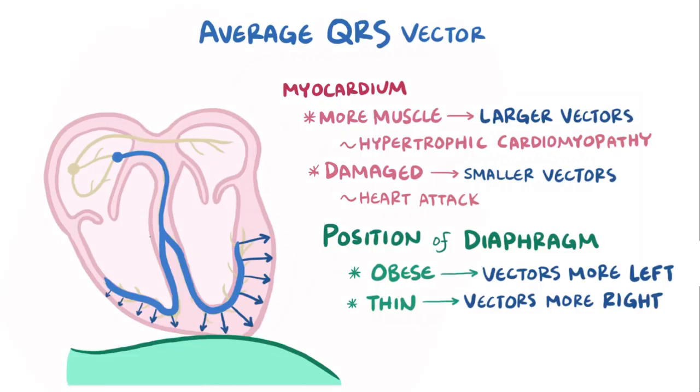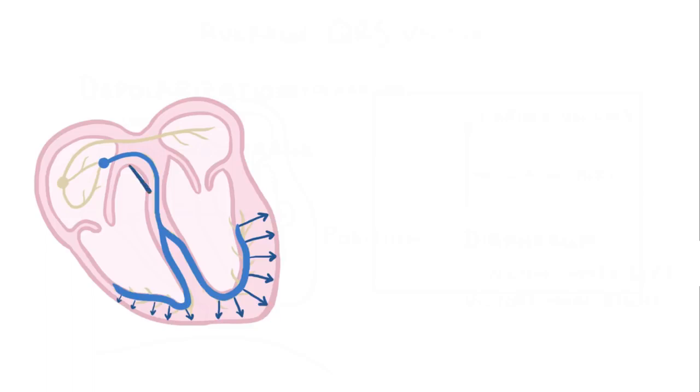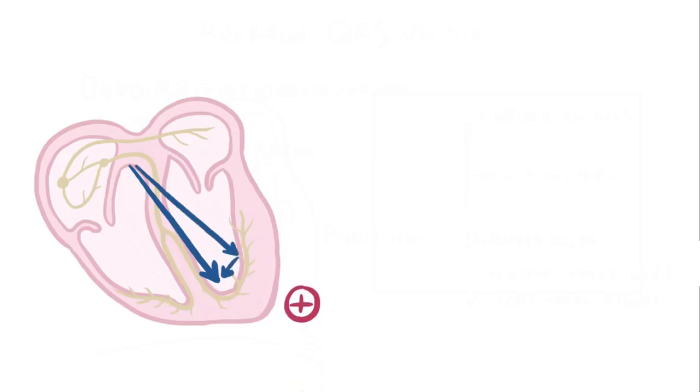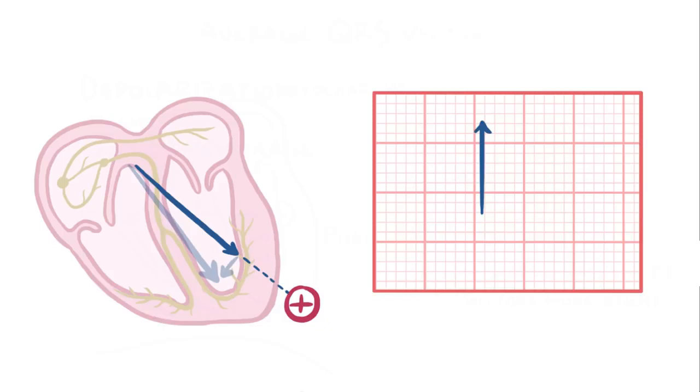When everything is taken into consideration, all of the individual vectors are added up, and then there's one overall representative vector arrow, which starts from the AV node and points in one direction through the ventricles. Now remember that vectors can be broken down into two perpendicular vector components. So if you look at the component that points at the positive lead electrode, that's what gets recorded on the ECG, and therefore when you plot these vectors over the course of a ventricular depolarization, you end up with the QRS complex.